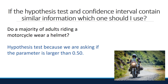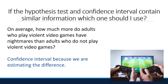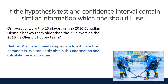Example: Are the following questions best assessed using a confidence interval, a hypothesis test, or is statistical inference not relevant? First: do the majority of adults riding a motorcycle wear a helmet? A hypothesis test would be best because we're asking if the parameter is larger than 0.5. Second: on average, how much more do adults who play violent video games have nightmares than those who do not? A confidence interval is best because we're estimating the difference between the two groups. Third: on average, were the 23 players on the 2010 Canadian Olympic hockey team older than the 23 players on the 2010 U.S. Olympic hockey team? Neither is appropriate — we don't need sample data to estimate parameters, as we could easily obtain and calculate the exact values. This concludes the Module 13.1 notes.